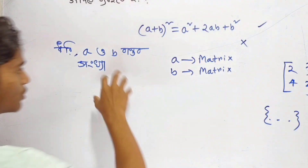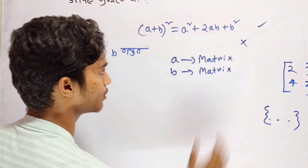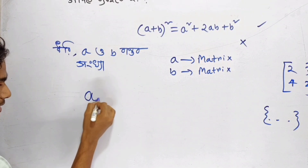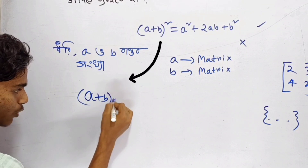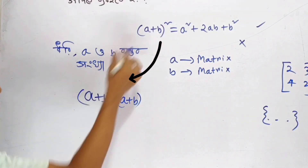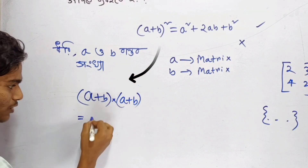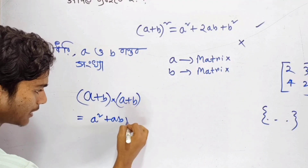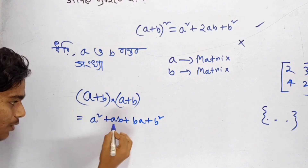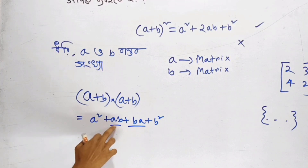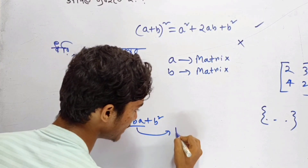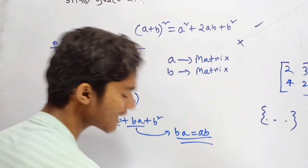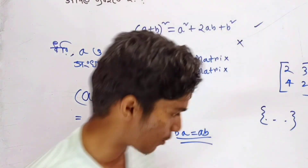Why do we explain this? Why do we say true? Why do we say a plus b whole square? Why do we say (a + b) into (a + b)? So: a times b into a, that is ba, and b squared. This is (a + b) whole square. So what do we say?